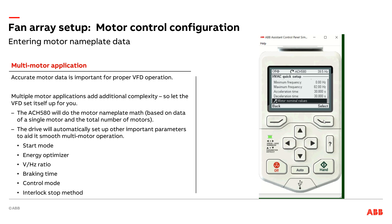And there you go. You just set up an ACH580 VFD to run a multiple motor application. You told it how many motors you had and what the motor nameplate data was for a single motor — and we're assuming all the motors are identical, which is an important key part of this functionality. All those key parameters and settings that are a good idea to change for a multiple motor application were automatically changed, and we gave you a summary of what was changed so you can go back and override anything if needed. So there you go — multiple motor setup with the ACH580. If you have any questions, reach out to your local ABB representative or your friendly ABB factory application engineer. Thank you.